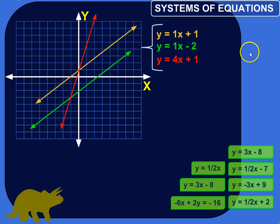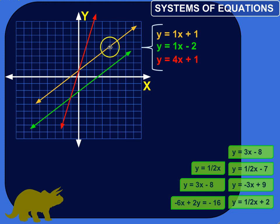How do you tell if lines are parallel to each other, or if they cross, or if it's actually the same line? Well, you can graph them and just look. But if you don't have time to graph them, or if the exercise is to know this from the equations, you've got to figure out a way to know these things without having to graph them.